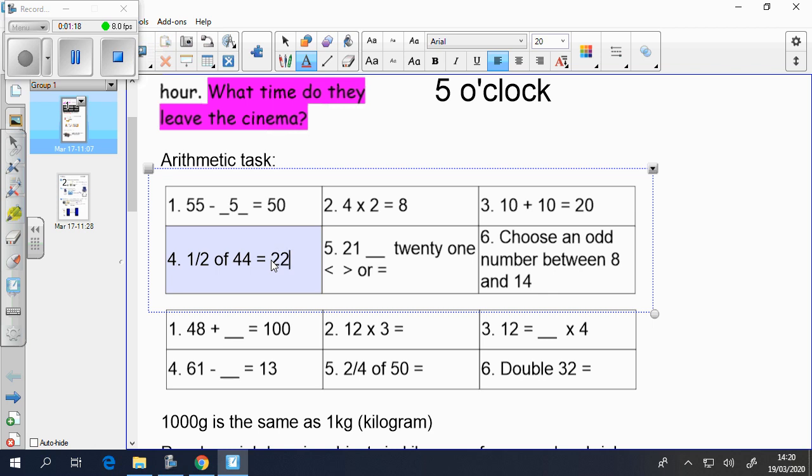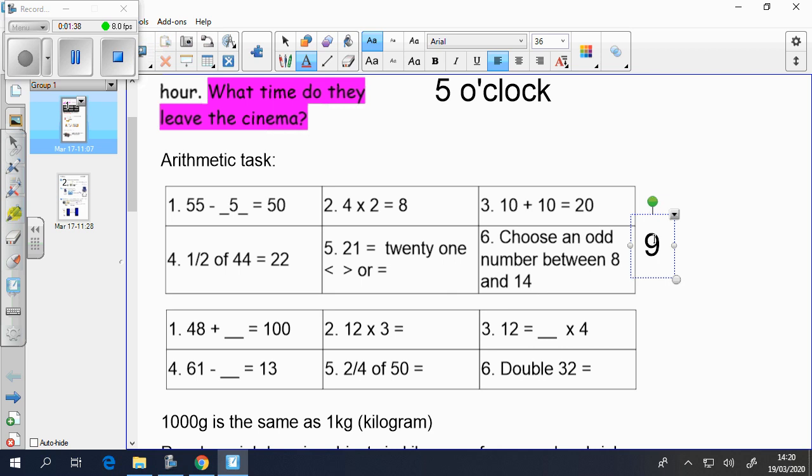Half of 44 is 22. Here we have 21 and then 21 written in words. You have to use the less than, greater than or equal to symbol. They are both the same, so you'll use the equal symbol. Choose an odd number between 8 and 14. You could have had 9, 11 or 13. Any one of those are correct.